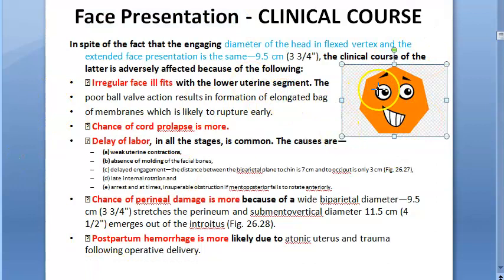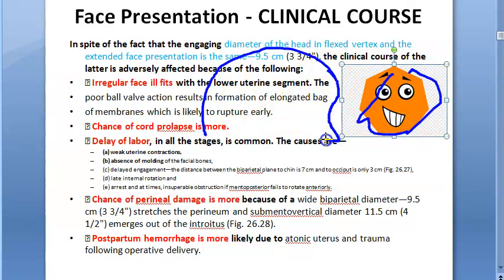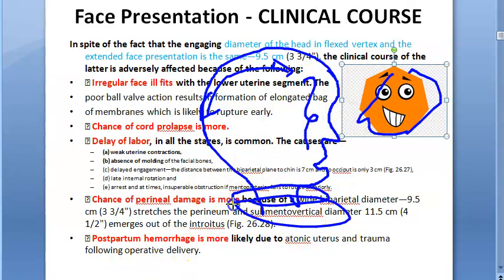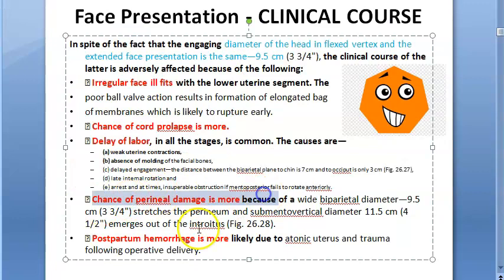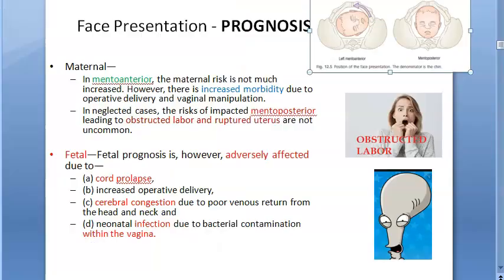Face presentation is slightly different because unlike the occiput, the face is an irregular structure - not smooth like the occiput. There is a chance of cord prolapse in face presentation. There can be delay of labor, perineal damage - perineal damage is important. Postpartum hemorrhage is more due to atonic uterus. Face presentation is a malpresentation.